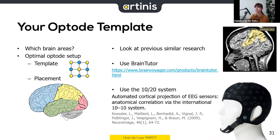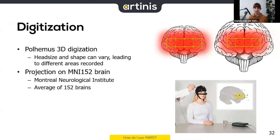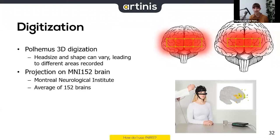One more thing about placement: head sizes can vary, but the optode template does not scale with head size — the distance between transmitter and receiver must stay at 30 millimeters. This means you'll measure a different surface area depending on head size. You can estimate this surface using digitization; with the Polhemus you can create a projection of your template onto a template brain to more accurately estimate which brain areas you're measuring.